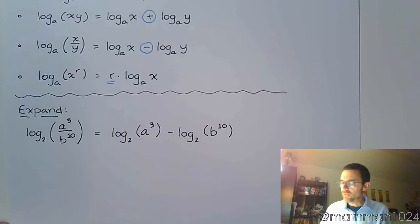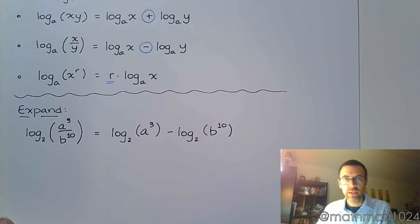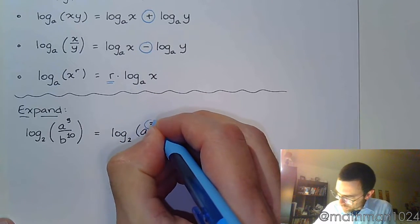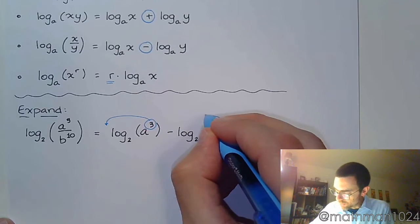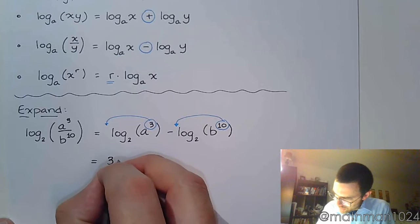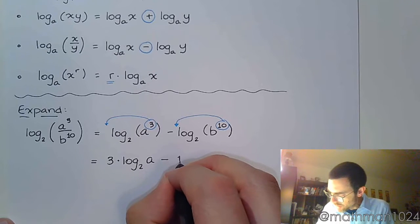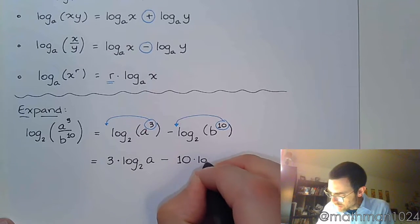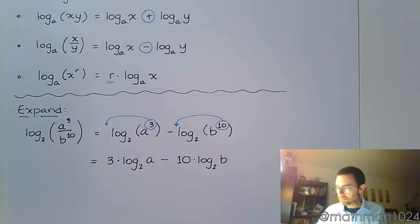But we're not done. We're going to completely expand this, and so now we want to look at this third property that says if you have a power inside the logarithm, you can just bring that up front as a factor. So that means that we can take this power of 3, bring it out front, and we can do the same thing with this power of 10, bring it out in front of its respective logarithm. And so now we have 3 times log base 2 of a minus 10 times log base 2 of b. And there you have it. This guy is completely expanded now.